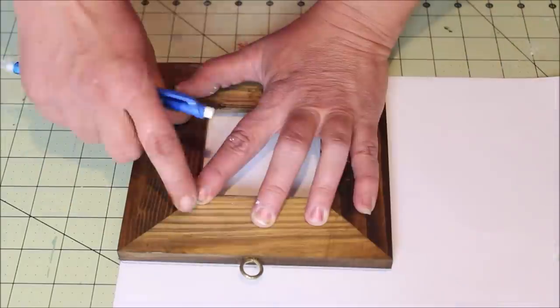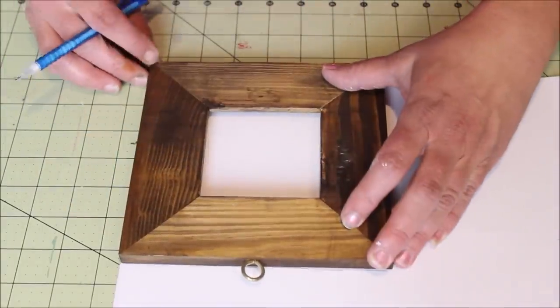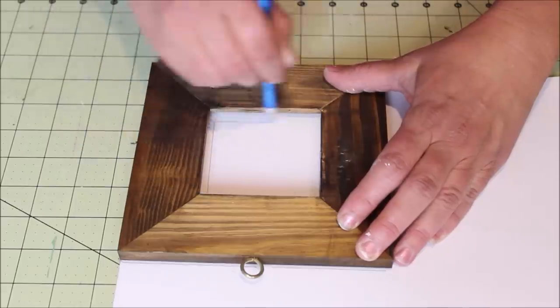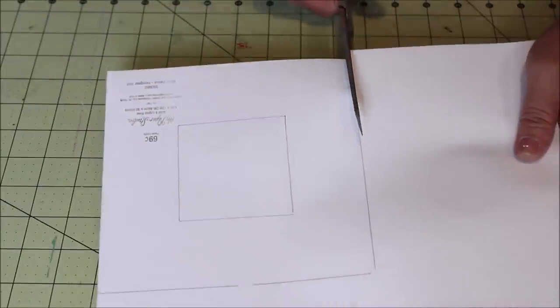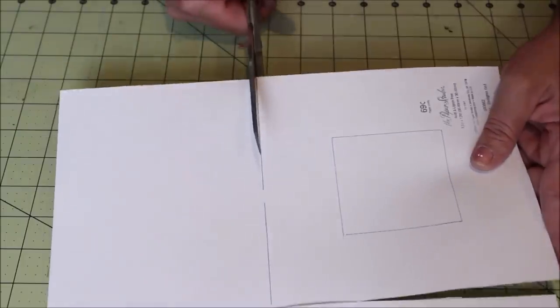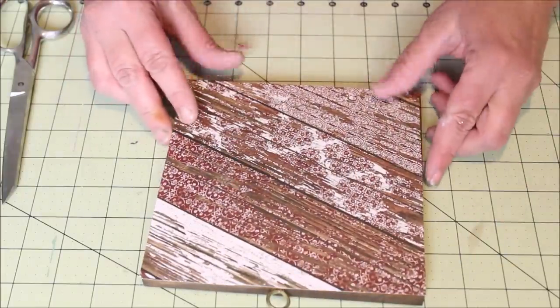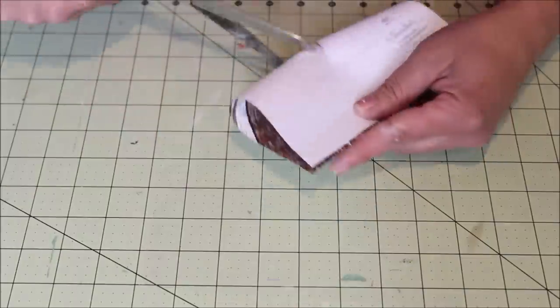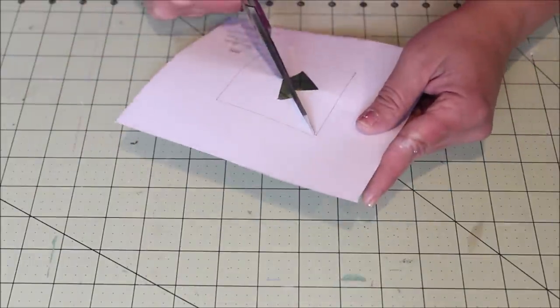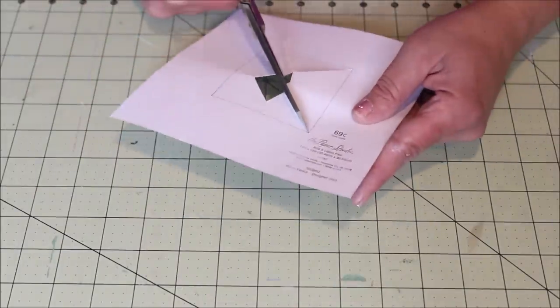Then using a pencil, I simply outlined the inside and outside edges of the frame. Then using a pair of scissors, I cut out the shape. I stopped before cutting out the inside of the shape to make sure that it fit the frame pretty well. And once it was looking good to go, I then took my scissors and cut out the inside shape as well.